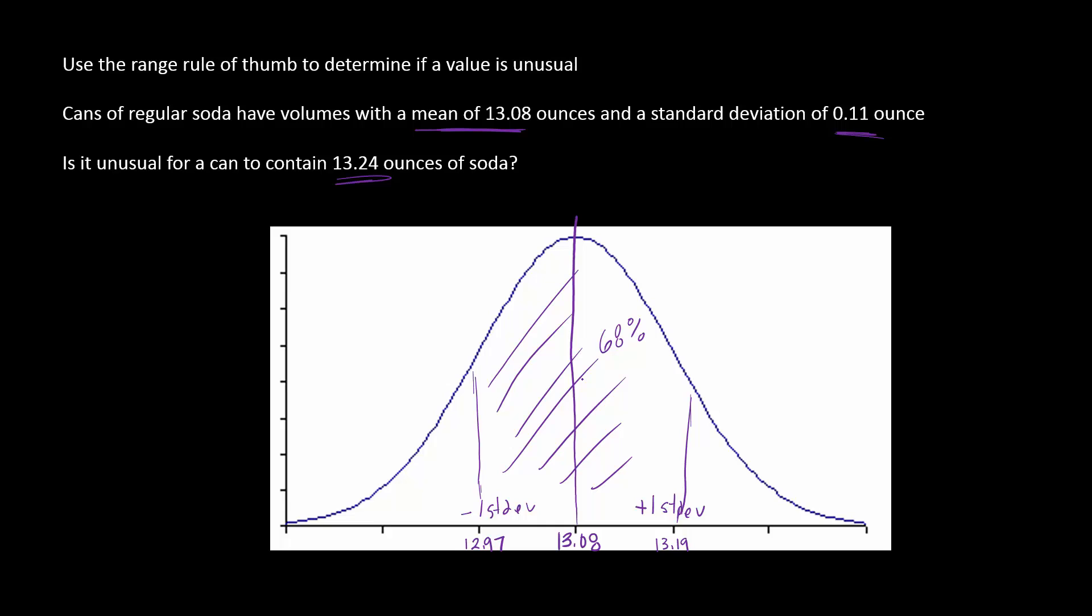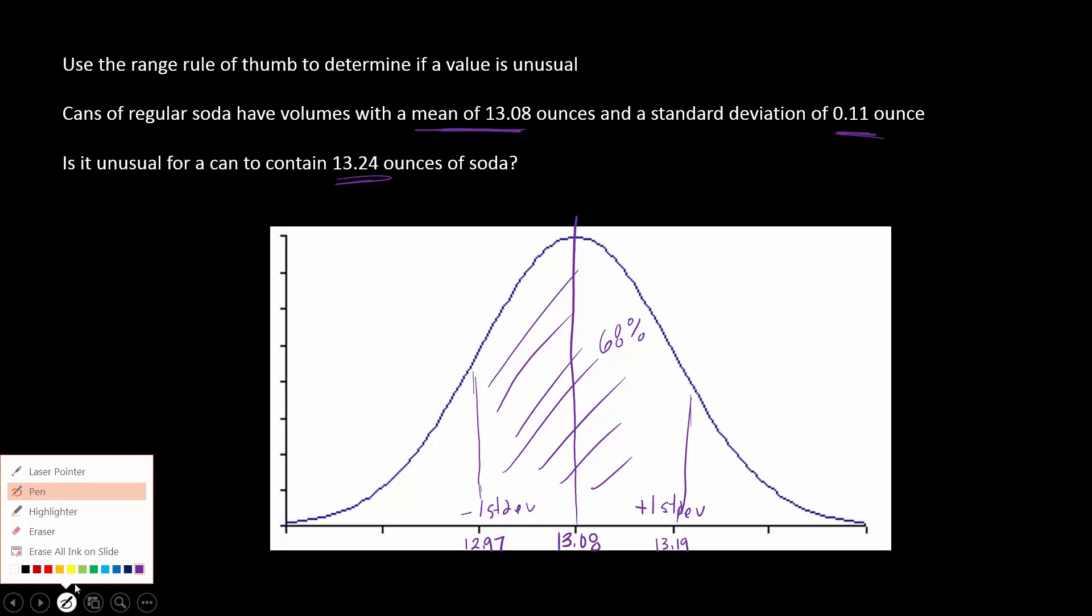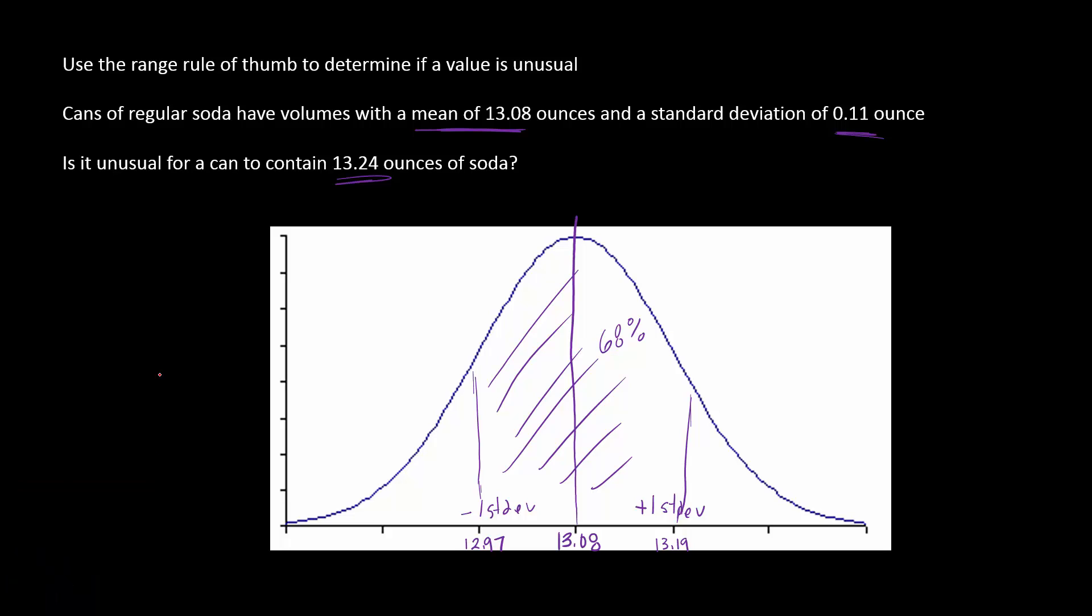Well, a usual value is going to be plus or minus two standard deviations. If you remember that if you're within two standard deviations, this area right here is 95 percent, so that's pretty usual.